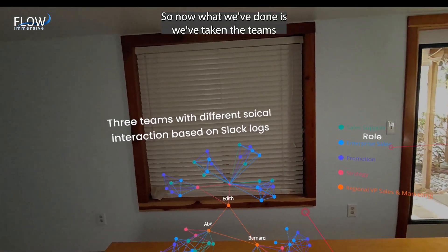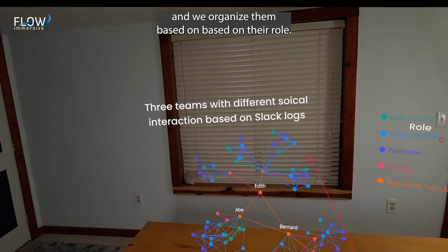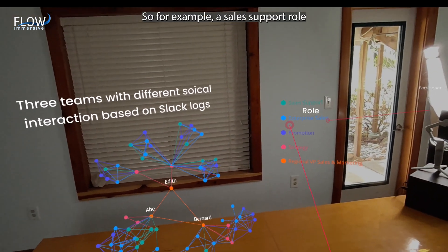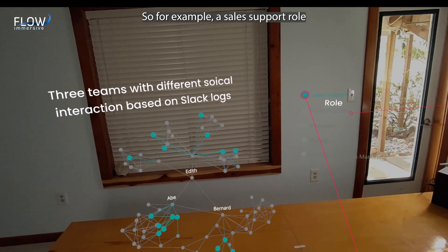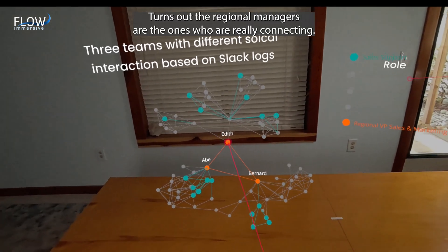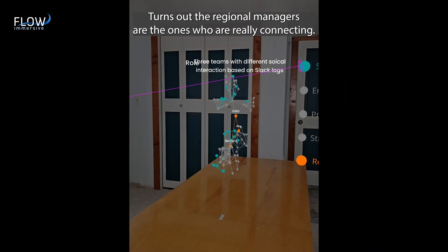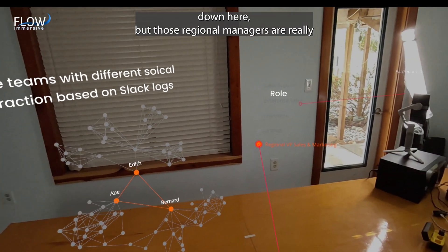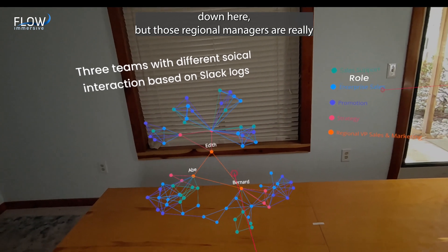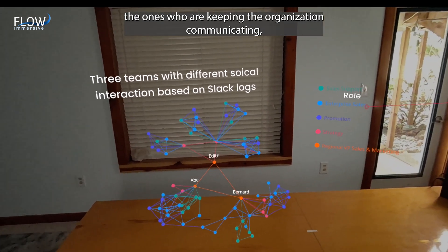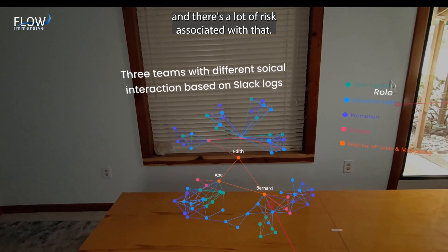So now what we've done is we've taken the teams and we've organized them based on their role. So for example, a sales support role or the regional manager role. It turns out the regional managers are the ones who are really connecting. They're the glue that are connecting folks. There's another connection down here, but those regional managers are really the ones who are keeping the organization communicating. And there's a lot of risk associated with that.